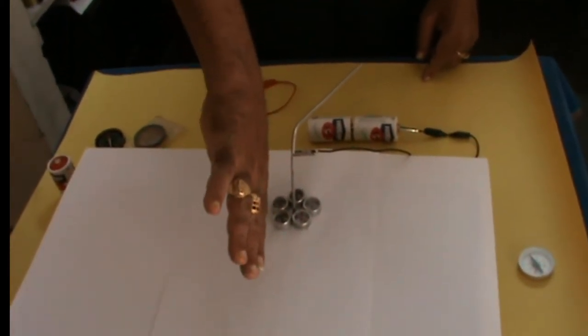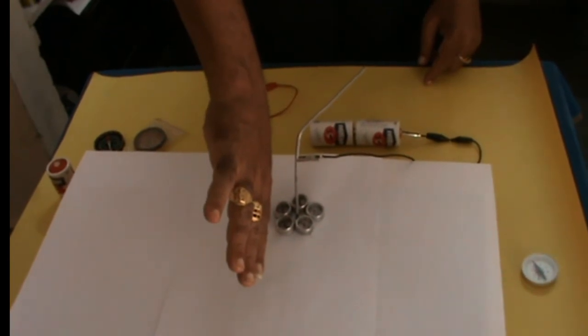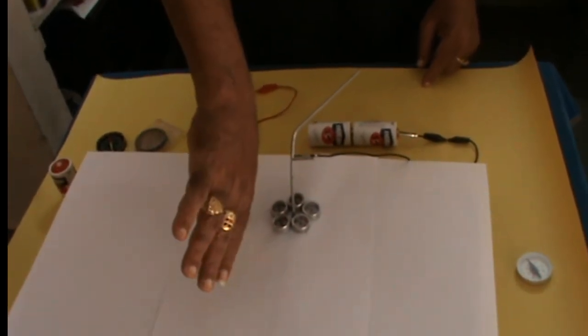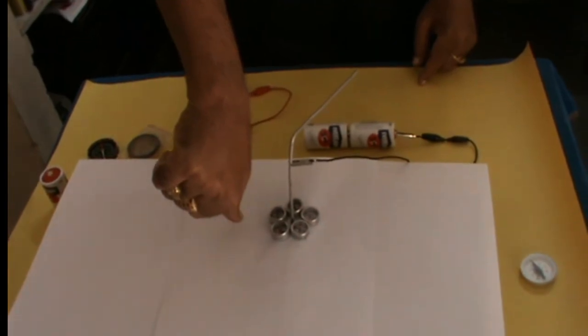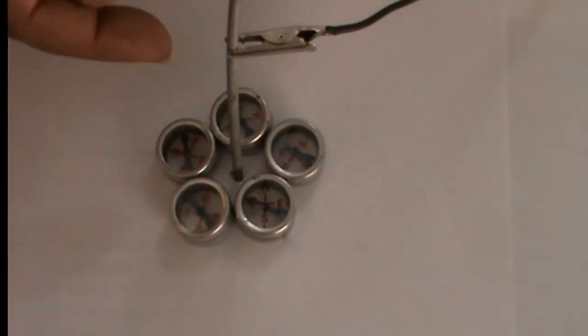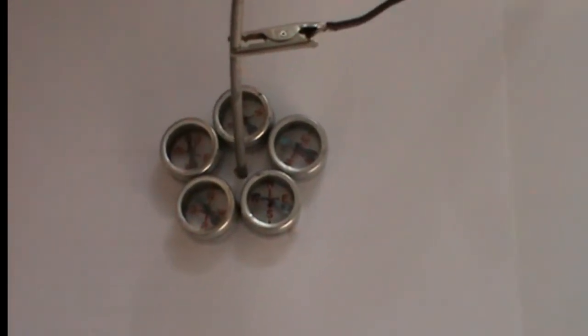According to right hand grip rule, you have to keep your thumb in the direction of the current. The remaining four fingers, you just see the direction of the compass needles.